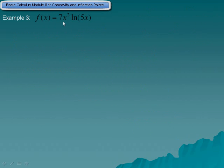Example three gives us a function with two things being multiplied together, so we need to use the product rule (uv′ + u′v) and the chain rule. We need to find intervals of concavity and the inflection point if it exists. We must be careful because the domain requires 5x > 0, so x must be greater than 0.